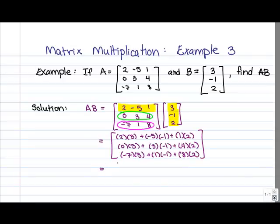So here we have our 3 by 1 resulting matrix, and all we have to do now is the arithmetic to simplify what we have in each entry. So in entry 1, 1, we've got 6 plus 5 plus 2, so that's 13.